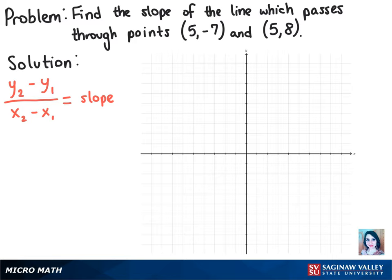So we want to start with the y values on top. So we'll have negative 7 minus 8. Over on the bottom we're going to have the x values, so 5 minus 5.